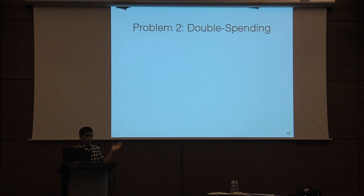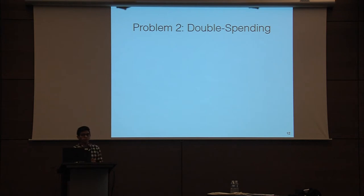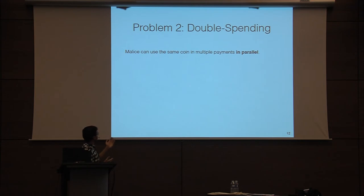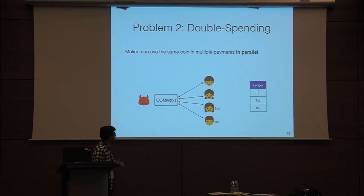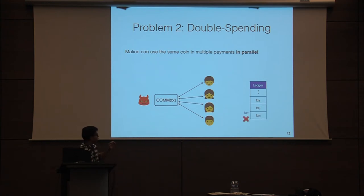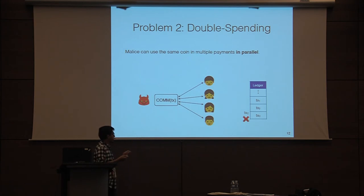That solves the issue of malicious merchants trying to de-anonymize customers. But what about malicious customers? A malicious Alice can use the same coin with multiple merchants at the same time. Let's say she's transacting with four merchants and two of them become macro payments. Carol gets her transaction onto the ledger first and Bob, being a bit slow, loses out. So Bob can't redeem the macro payment and Alice has gained utility at his expense.